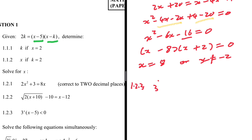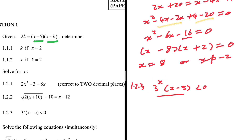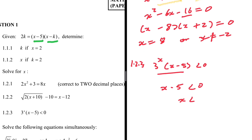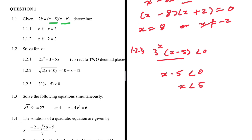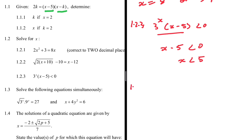For 1.2.3: 3^x · (x - 5) < 0. We need to find values of x for which this is less than zero. Note that 3^x is always positive — no value of x makes it negative. So we only need x - 5 < 0, which gives x < 5. That is the solution.